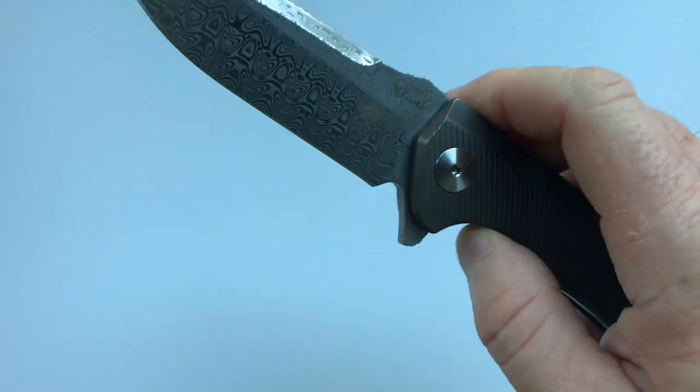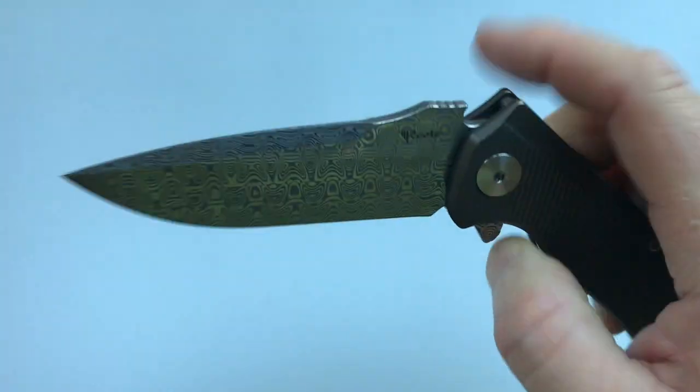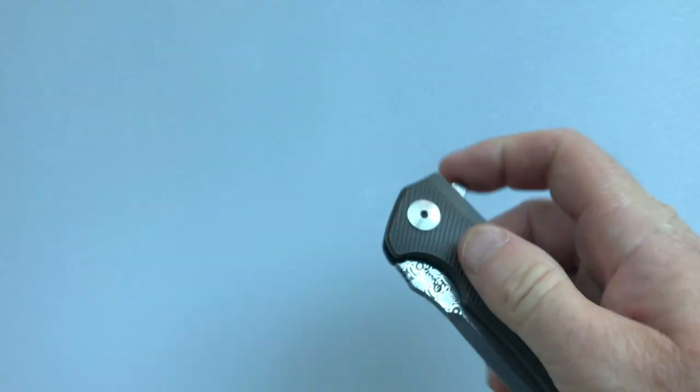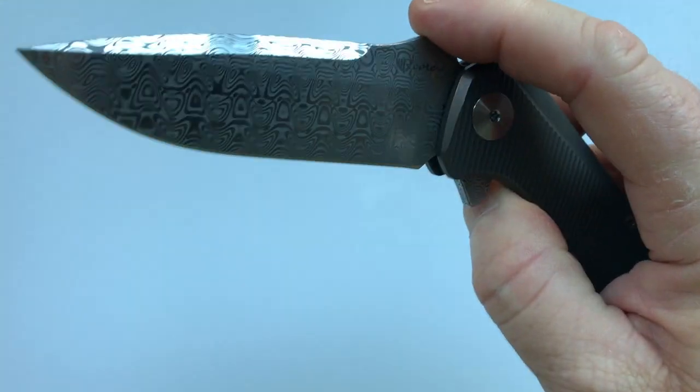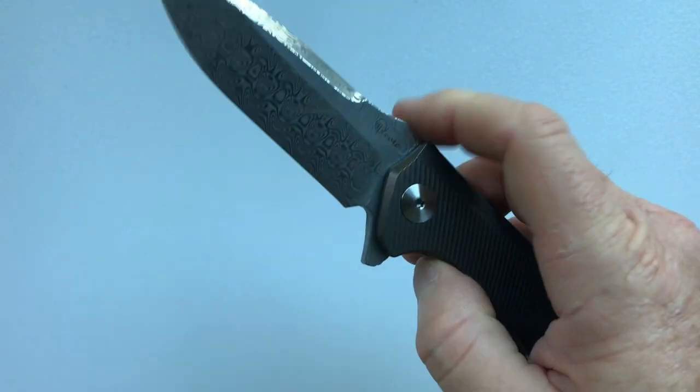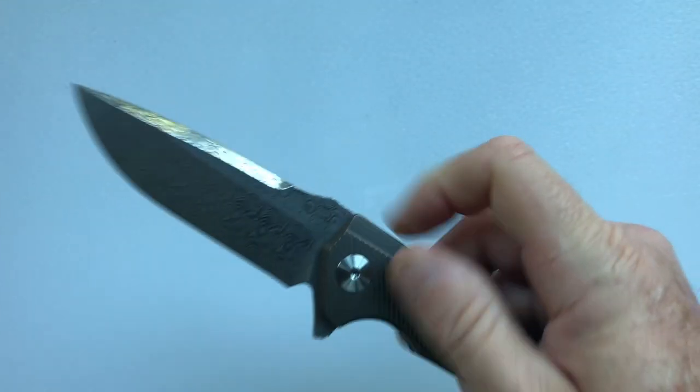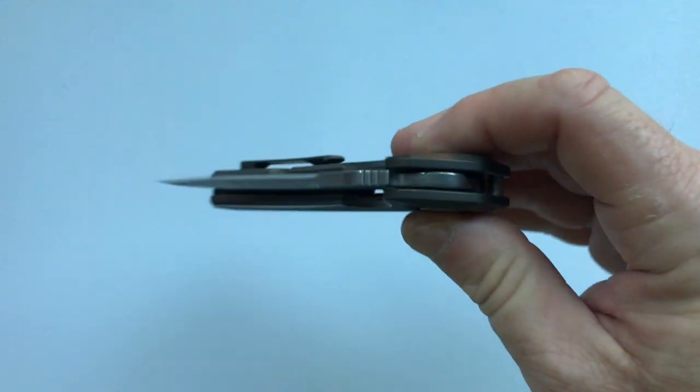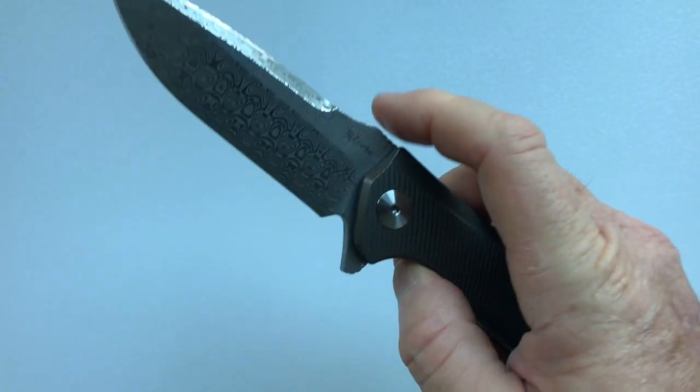The pivot runs on a caged multi-row bearing which is made of ceramic ball bearings, and it gives this knife one of the smoothest actions you'll ever find in a high-end production knife. This action is just silk and that's the reason that I purchased the knife. The action was just outstanding.